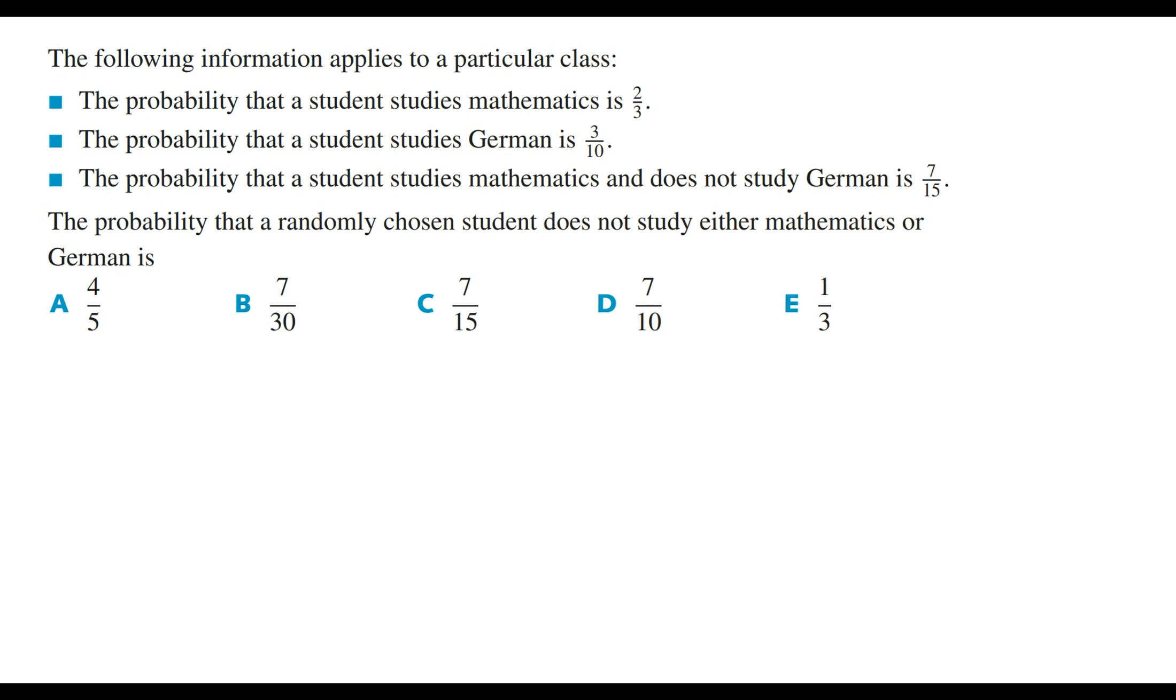Drawing a probability table we have the events studying maths and not studying maths, and studying German and not studying German.